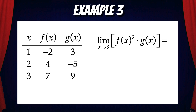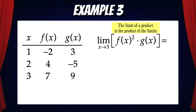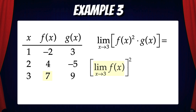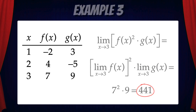How about this one? The limit of f(x) squared times g(x) as x approaches 3. We have multiple limit laws to consider. The limit of a function raised to a positive integer is the whole limit raised to that positive integer. Then the limit of a product is the product of the limits. So we first find the limit of f(x) as x approaches 3, which is 7, and then square that value. Then we multiply by the limit of g(x) as x approaches 3, which is 9. 7 squared times 9 is 441, and that is our solution.